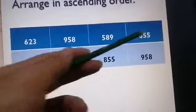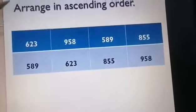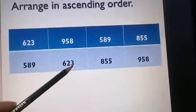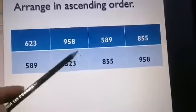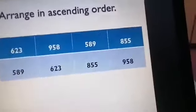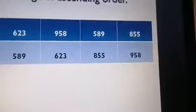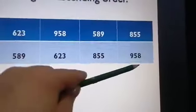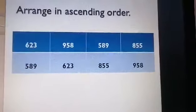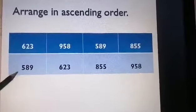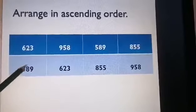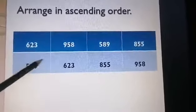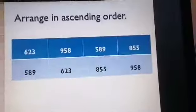Then 6, 9, or 8? Excellent — 6. So we have 623 next. Then we have 9 and 8. Which number is smaller? Excellent — number 8, then number 9. So these numbers are in ascending order from the smallest to the greatest: 589, 623, 855, 958.